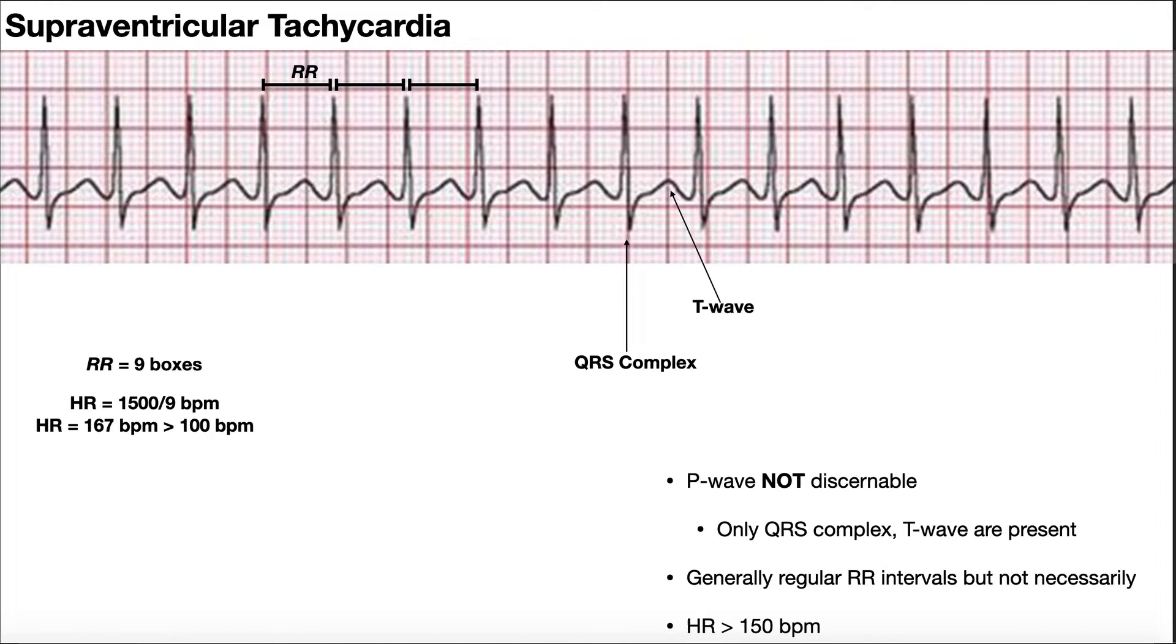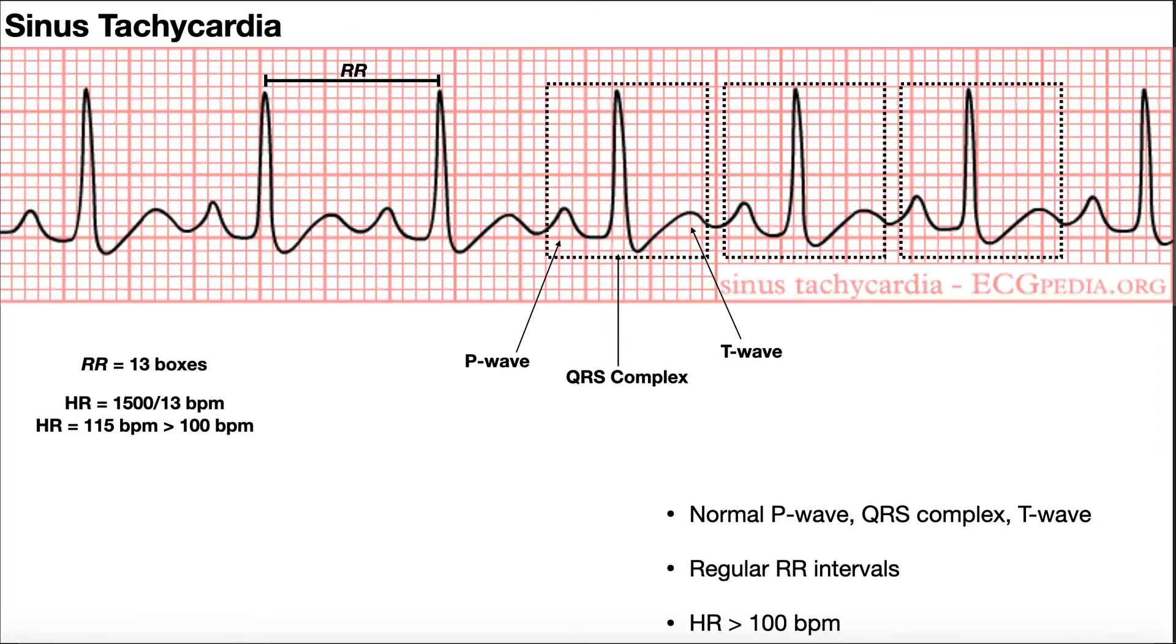We've kind of already hit this. In order to be supraventricular tachycardia, it has to be a heart rate greater than 150 beats a minute. A normal sinus tachycardia, as we talked about in the previous video, is going to be between 100 and 150. If it surpasses 150, it's most likely not a sinus tachycardia. It's supraventricular in nature. This one had a heart rate of 115, so that makes it a sinus tachycardia. In addition, it has a normal P wave, a normal QRS, and a normal T wave.